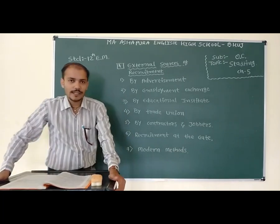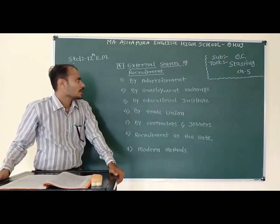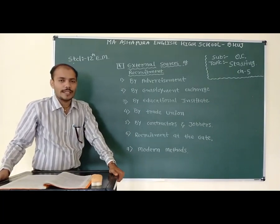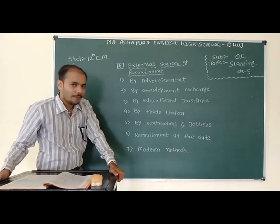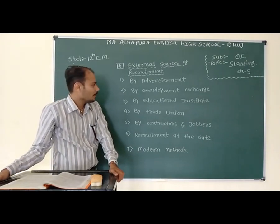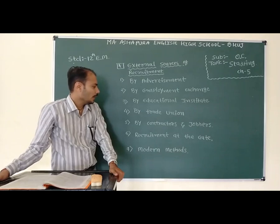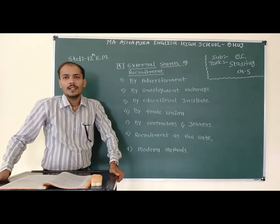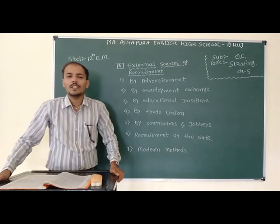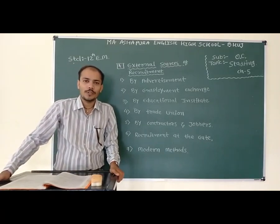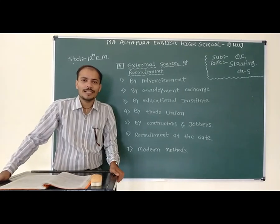Toh ye the total seven points of external sources of recruitment — ye most likely question hai for board examination. These are: by advertisement, by employment exchange, by educational institute, by trade union, by contractor and jobbers, recruitment at the gate, and modern method. Hey students, aaj is video ka itna hi. Next video mein next question ke saath milenge. Tab tak take care of yourself. Thank you so much, jai Matki.